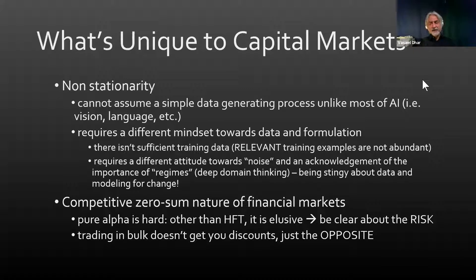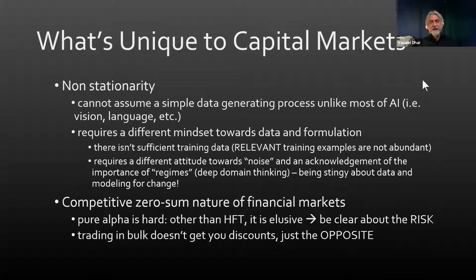Another aspect of the competitive nature of markets is that buying in bulk doesn't get you a discount — it's just the opposite. The more you want to trade, the larger you want to do it, you don't get a discount — you actually get penalized for it. The moment you try to scale, friction begins to get in the way.